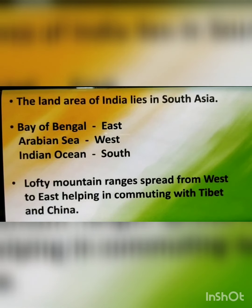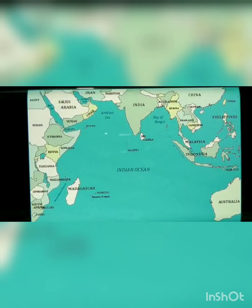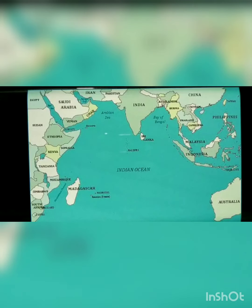India has accepted all cultural elements arrived from outside and these have merged into Indian society. As you can see in this picture, India is to the South of Asia, and below India there are major water bodies such as Bay of Bengal, Indian Ocean, and Arabian Sea. India shares most of its boundary with the ocean, and so this ocean is named after India.